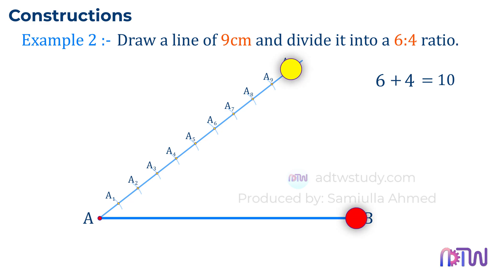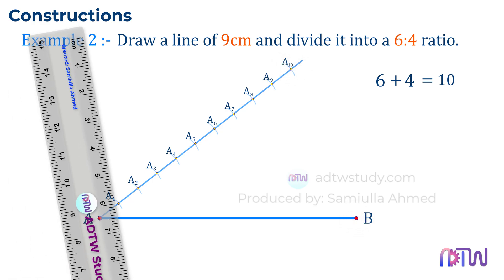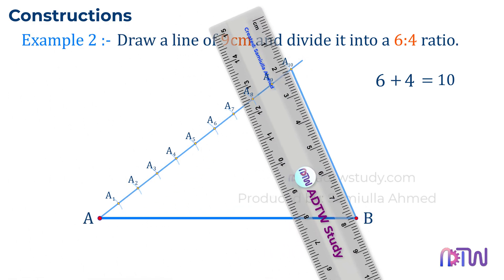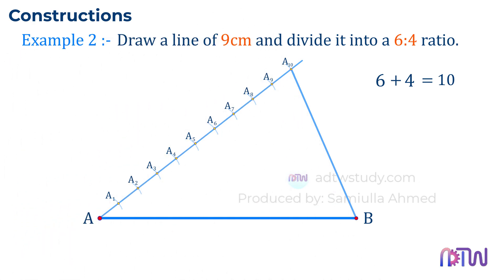Label these points as A1, A2, and so on up to A10. Next, join these two endpoints A10 and B as shown. After this, since we need to divide the line into 6 to 4 ratio, therefore we have to draw a line parallel to this line from point A6.